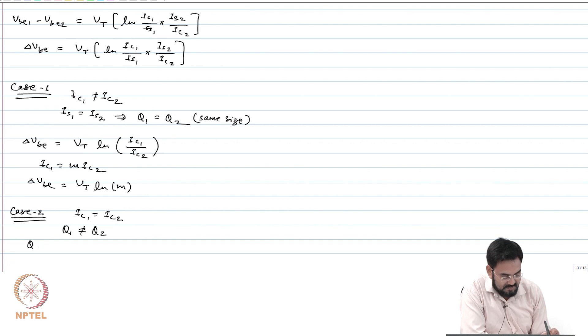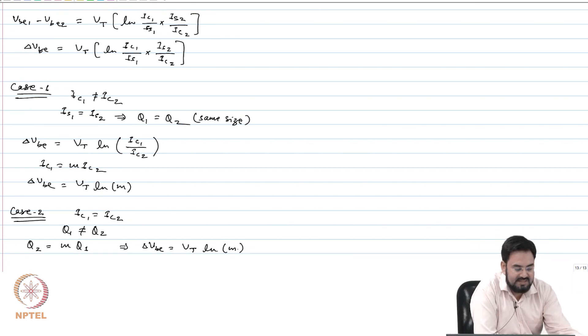So if I use Q2 equal to M times Q1, then this implies delta VB equal to VT ln M, because IC1, IC2 will cancel out and your reverse saturation current is proportional to your area. Larger the area, that will become M times of your IS1, IS2 will become and you will get the same expression. So most of the time we use this Case 2 actually, we always make the IC1 equal to IC2 because this gives us more accurate result compared to the other one.